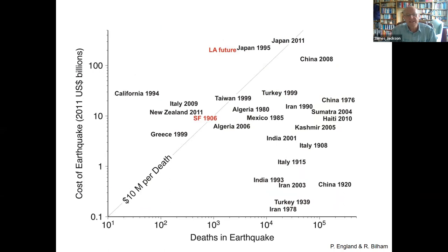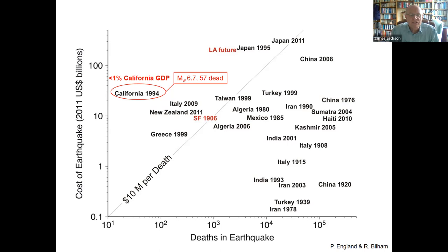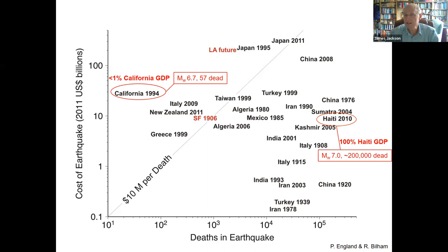Plotting deaths versus economic cost: the 1994 Northridge earthquake in suburban Los Angeles killed 57 people but cost 20-30 billion dollars — yet even that huge cost is a very small fraction of California's GDP. By contrast, the 2010 Haiti earthquake, of similar size, killed 200,000 people and cost 10 billion dollars — which was 100 percent of Haiti's entire GDP. So there's a great imbalance.